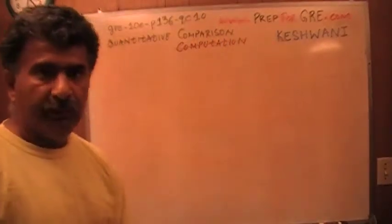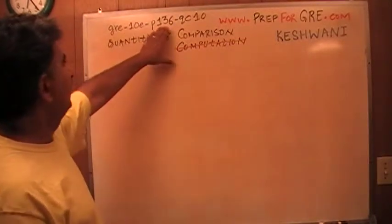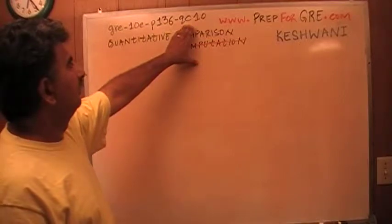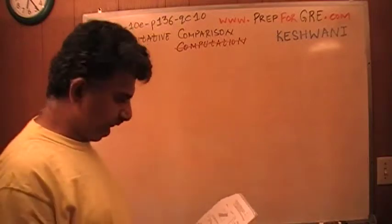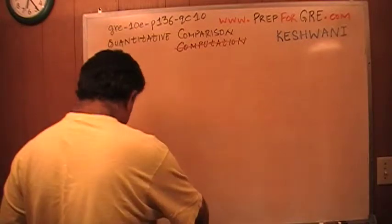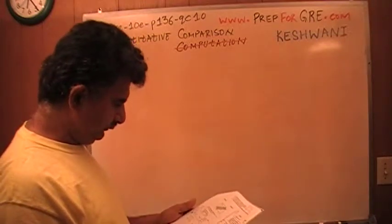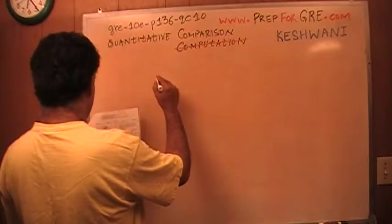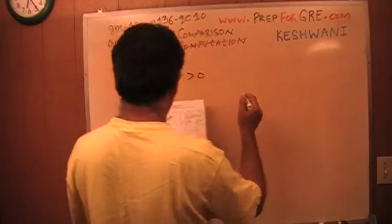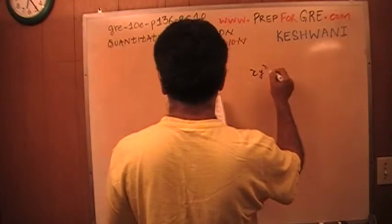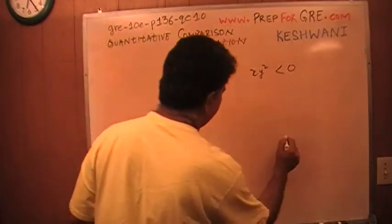The problem that I am about to solve is the one that you will find on page number 136. Quantitative comparison question, number 10. Let's take a look at it. We are told that x squared times y is positive. We are also told that x times y squared is negative. And we are asked to compare x and y.